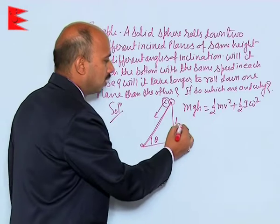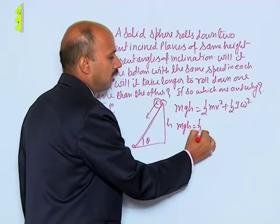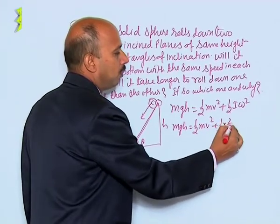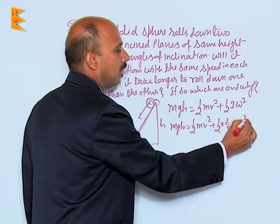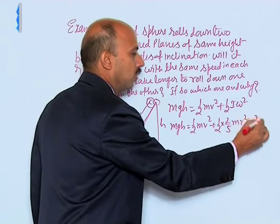Now, we can write mgh is equal to half mv² plus half I—we can write 2/5 mr², r² is the radius of the sphere—into ω².